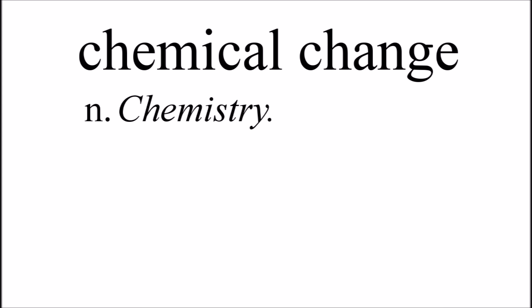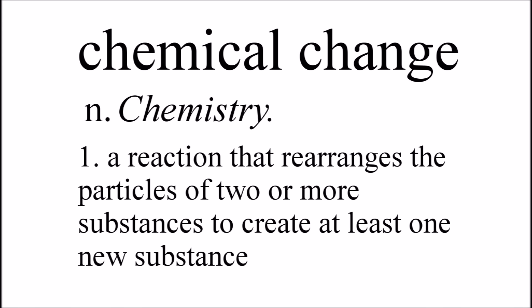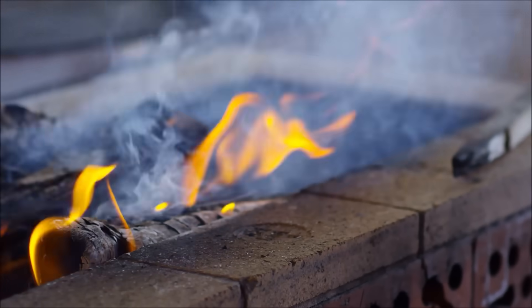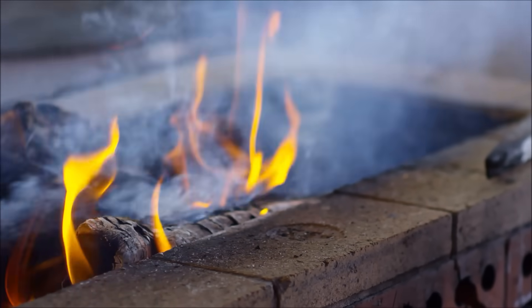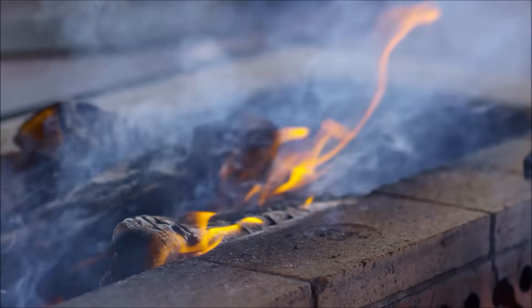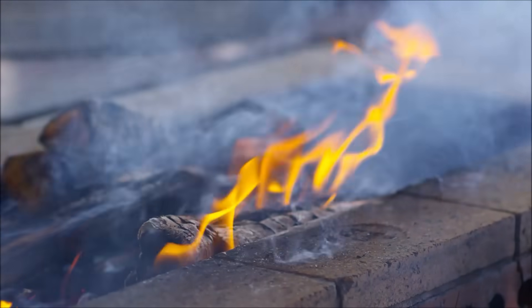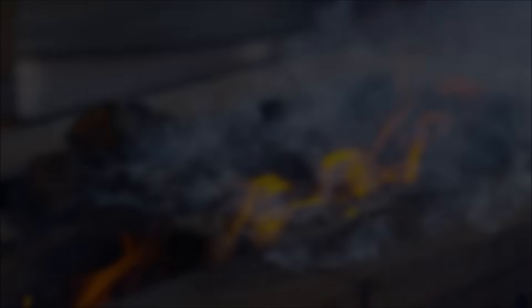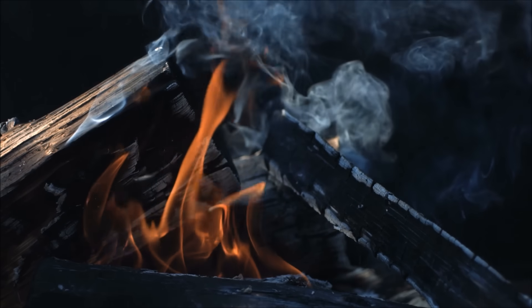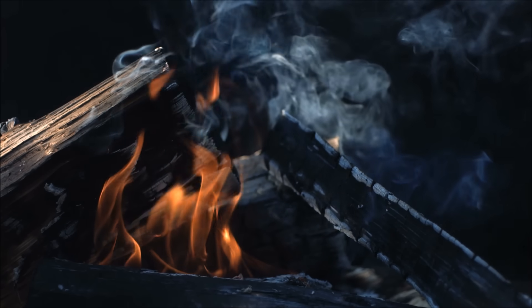Chemical changes occur when the particles of two or more substances are rearranged to form a new substance. For example, when you burn wood, the wood is transformed into a new substance, ash. Just like in baking, this change cannot be undone.